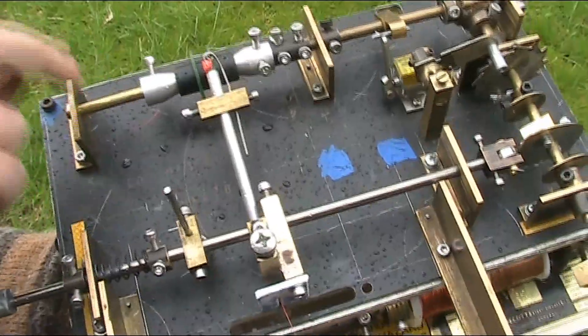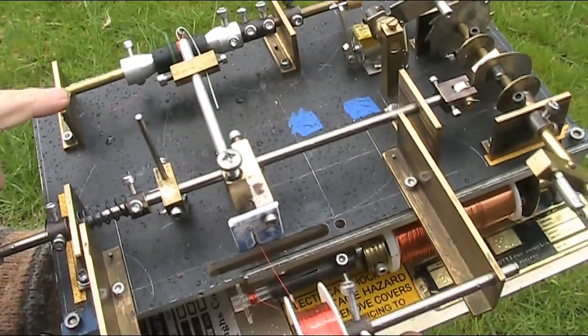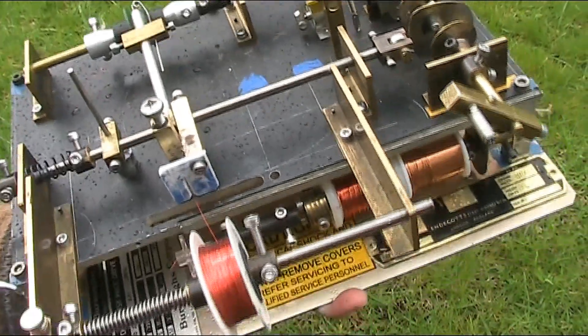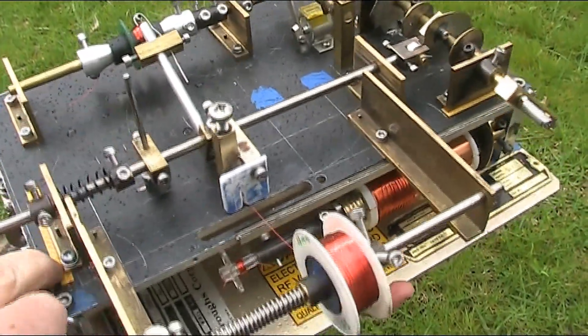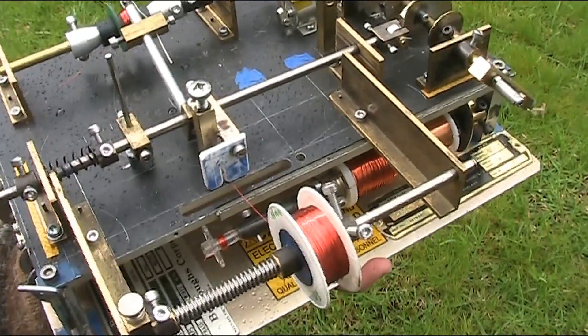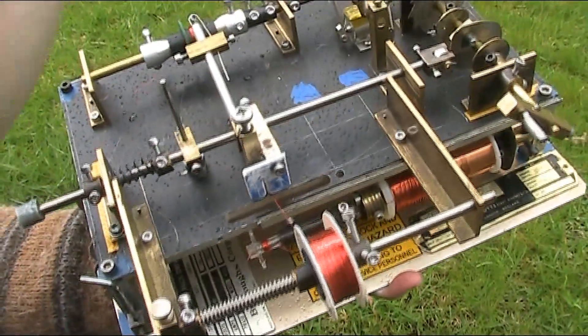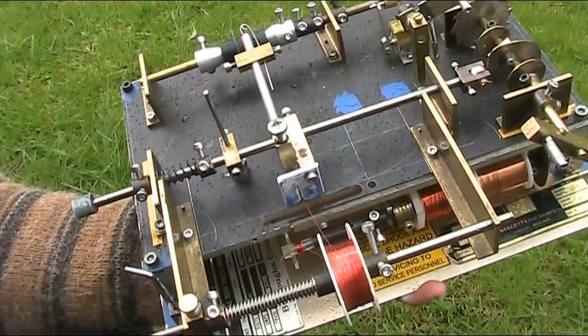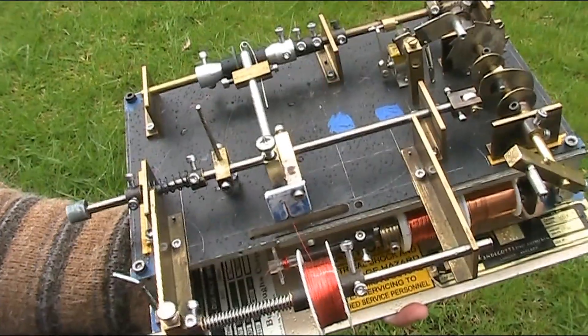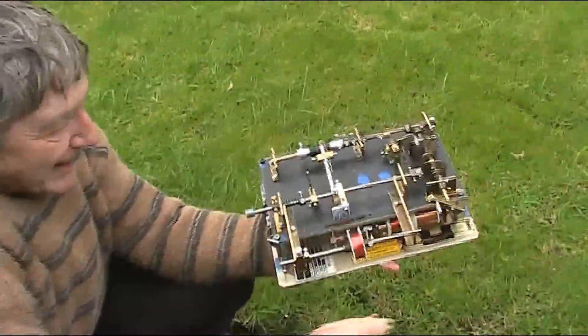The bearings, this is extruded brass stock, recovered from a builder's skip. And this little shim stock is just required there to set the faces of the bearing blocks, so that they're perfectly parallel. Otherwise, the shafts will bind. So, I needed that.